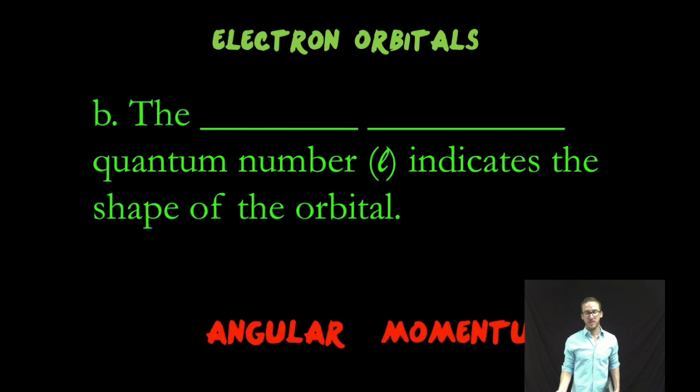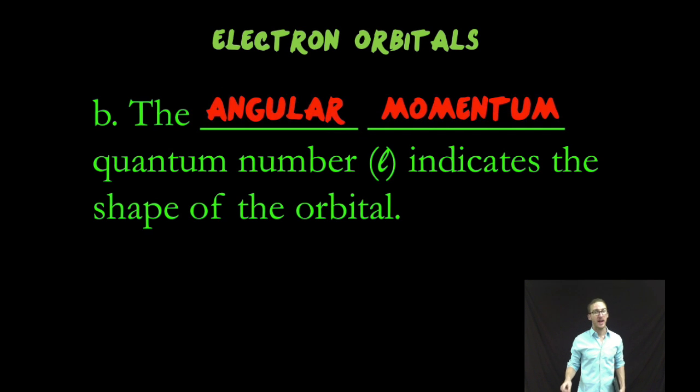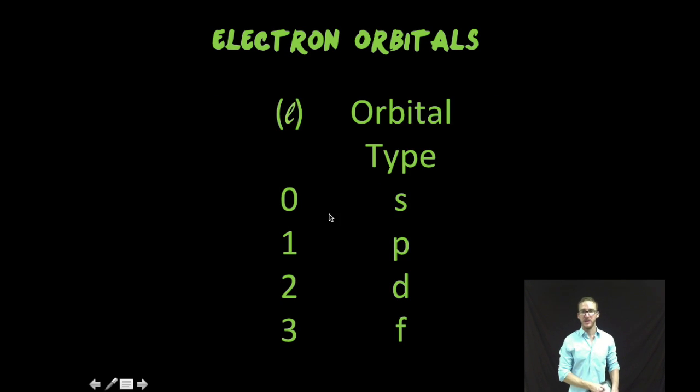The second quantum number is known as the angular momentum quantum number, which we'll represent with a cursive letter L. And it's going to tell us the shape of the orbital. So basically, what we've done is we've taken our four most common types of orbitals—the S, P, D, and F orbitals—and assigned them an angular momentum number. So the S shape orbitals will have an angular momentum quantum number of zero, P will have one, D will be two, F will be three.